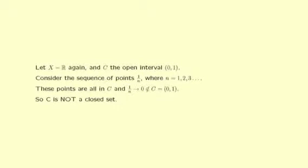An example may help. Consider X = ℝ and let C be the open interval (0, 1). Now consider the sequence of points 1/n as n = 1, 2, 3, and so on. These points are all in C and converge to the point 0, which is not in the set C, since C is the open interval (0, 1). So C is not a closed set.